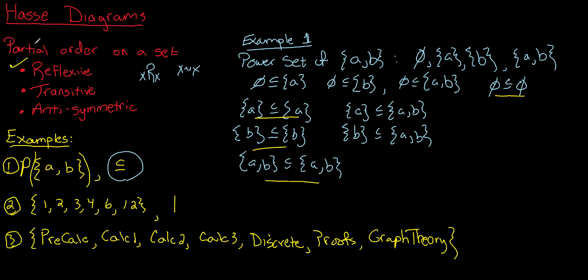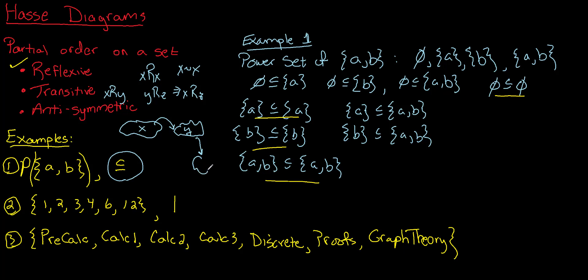Transitive means: if X relates to Y and Y relates to Z, then X relates to Z. I think of this like a frog that can hop from lily pad X to lily pad Y, and then from Y to Z. Well then it's certainly the case that we could make our way from X to Z — we just have to make a pit stop at Y. That's the idea of transitive.